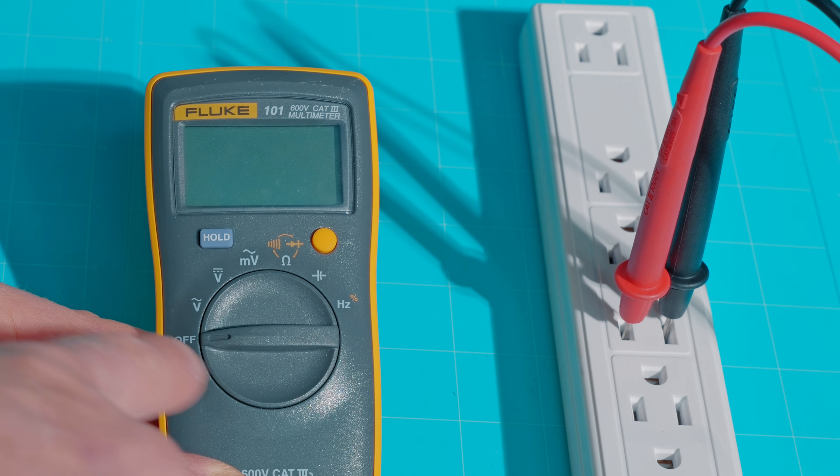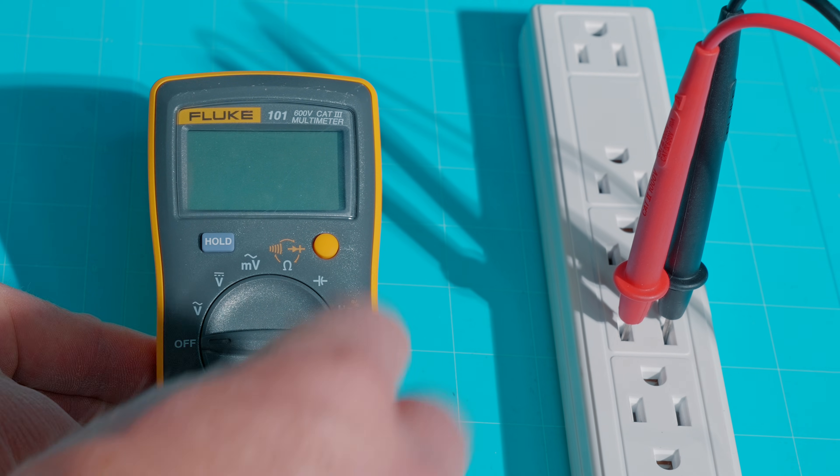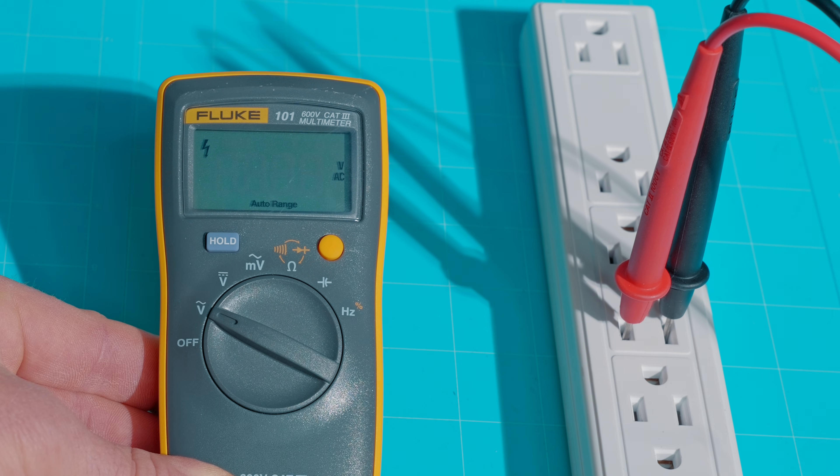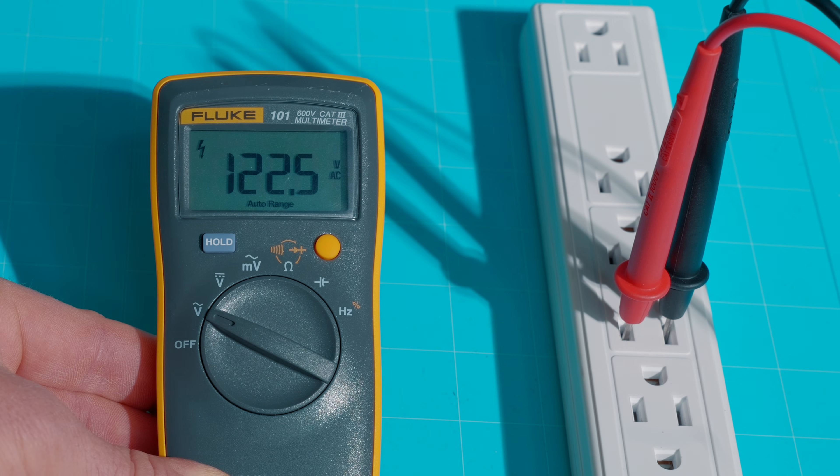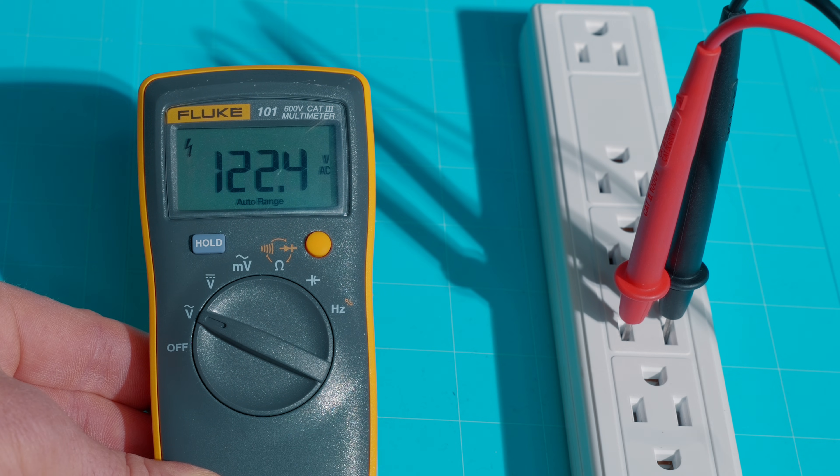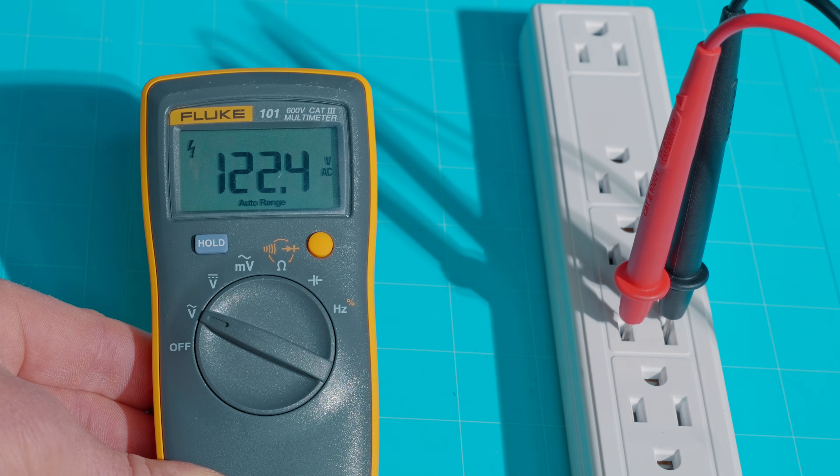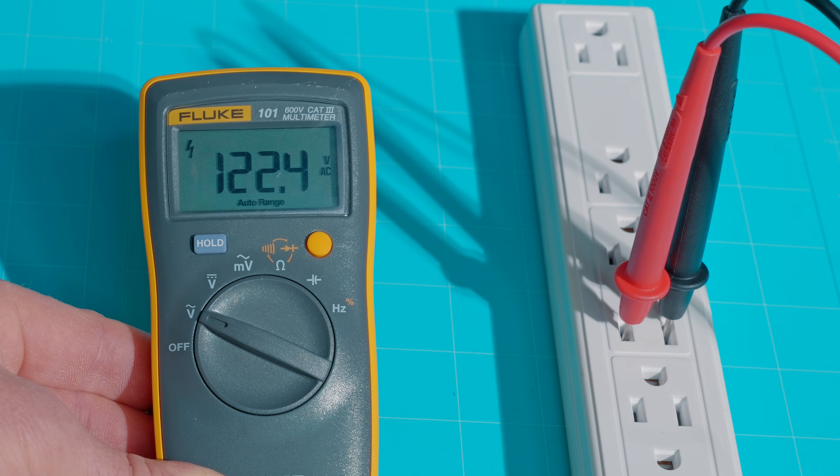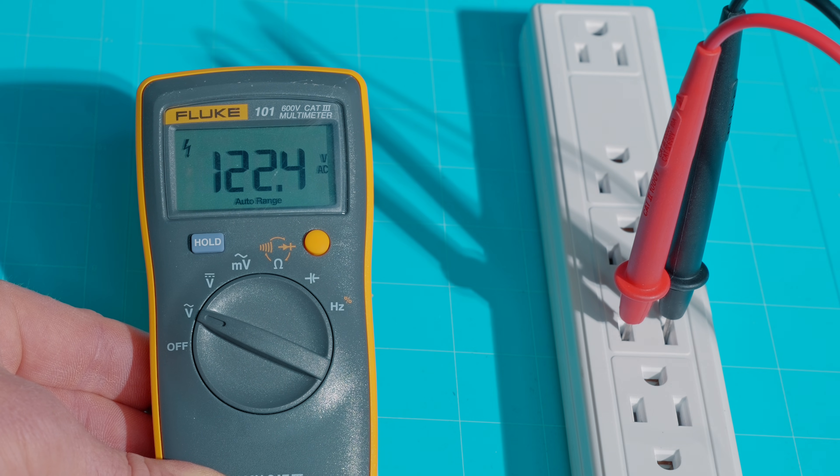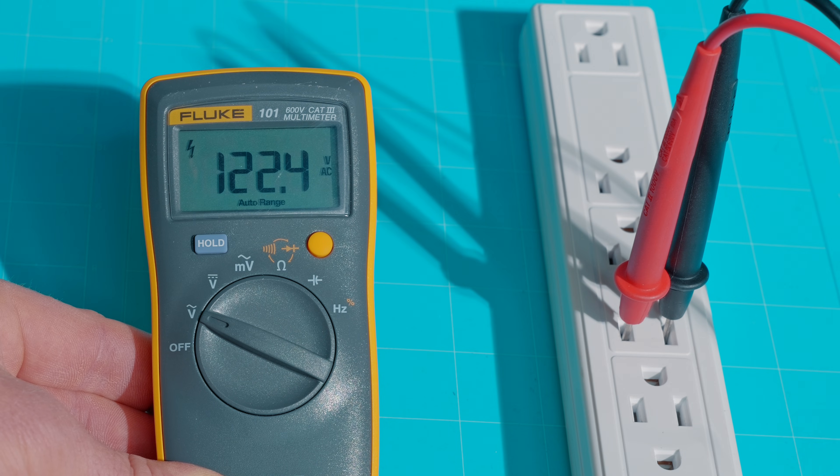Okay, the first setting I'll go over is the commonly used voltage AC. That's the V with the wavy line. We'll throw it into the first click there. I've already got it plugged into my power strip just for demonstrating. I am getting 122.4 volts AC. So that should be correct because this is an AC standard outlet. So right around 120 to 123 volts AC is what you're going to get.